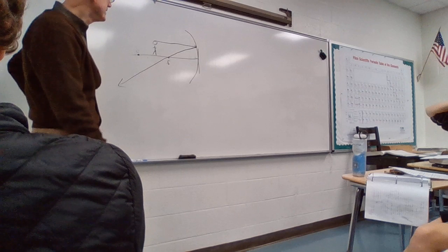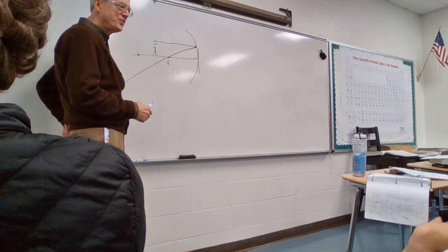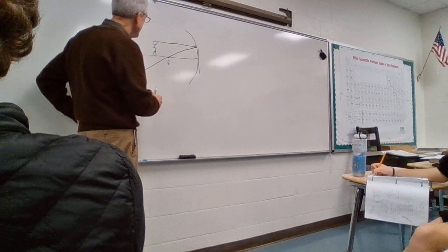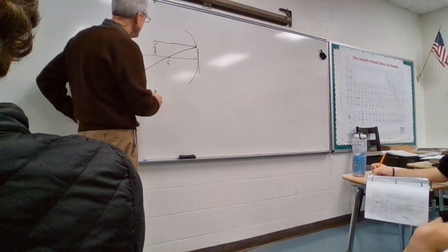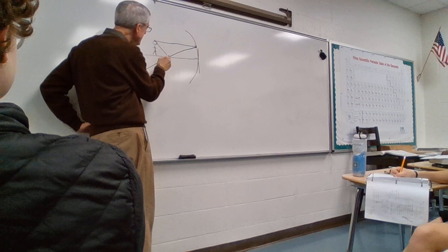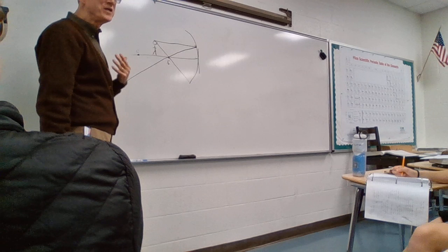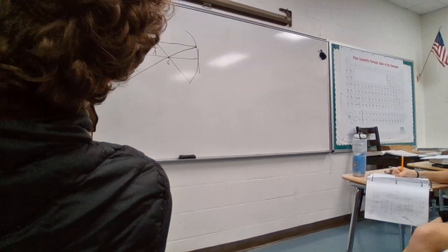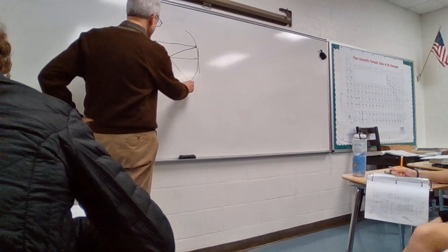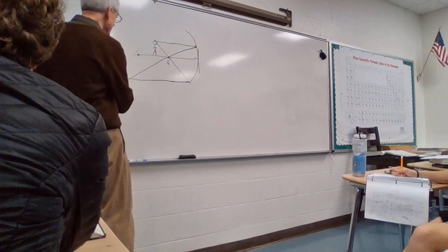The second ray also starts from the top of the object, but this one goes straight through the focal point F and keeps going until it hits the mirror. It then reflects parallel to the principal axis — the reverse of the first rule: if a ray goes in parallel it reflects through F; if it goes through F it reflects parallel. With your ruler, draw it as parallel as you can to the principal axis. The two reflected rays will cross somewhere — that's where the image is.